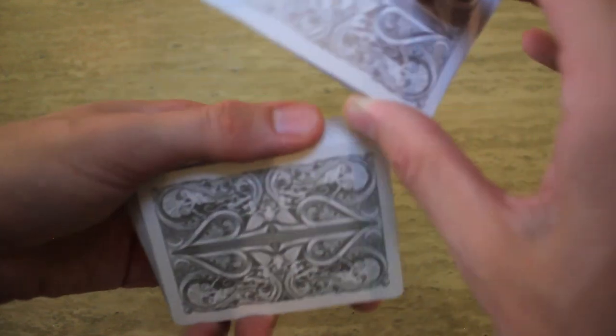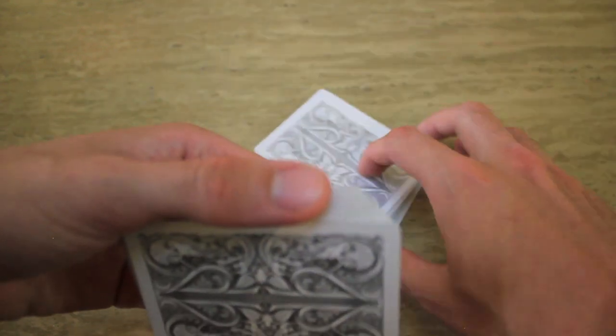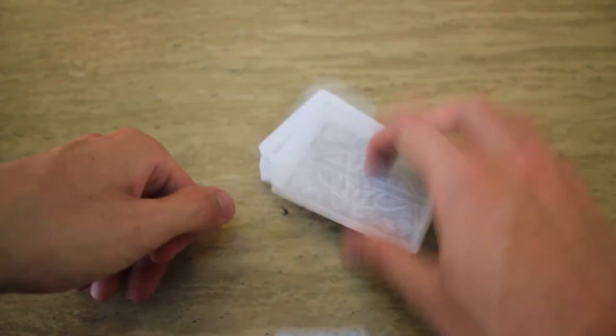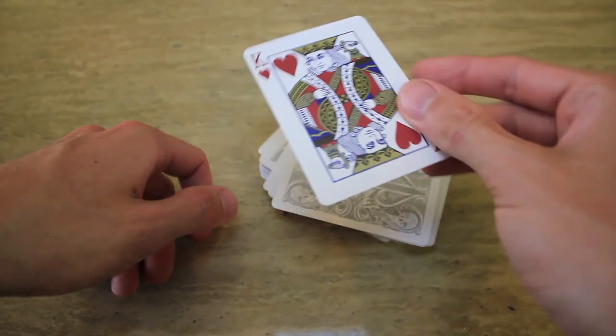And it just happens very briefly, but it gives the idea of alright, now that packet's going down and then that's going on top of it, but it remains a false cut the entire time.